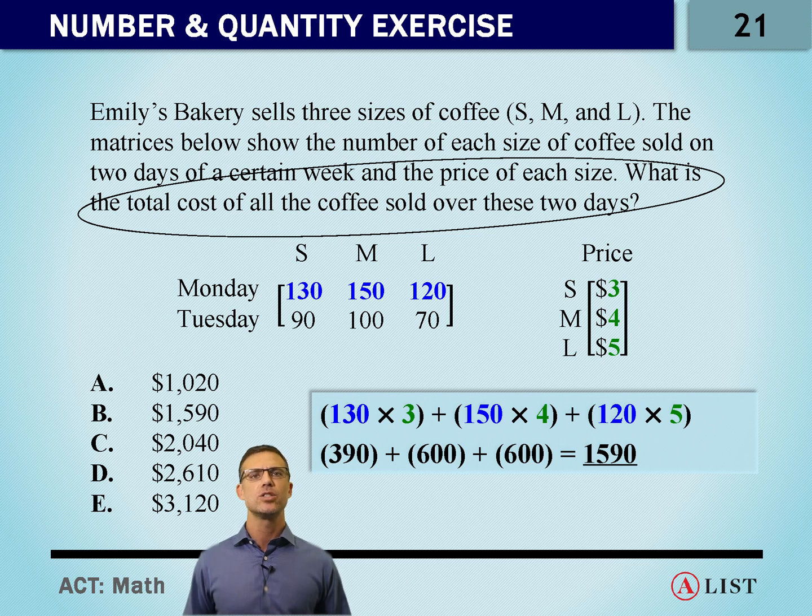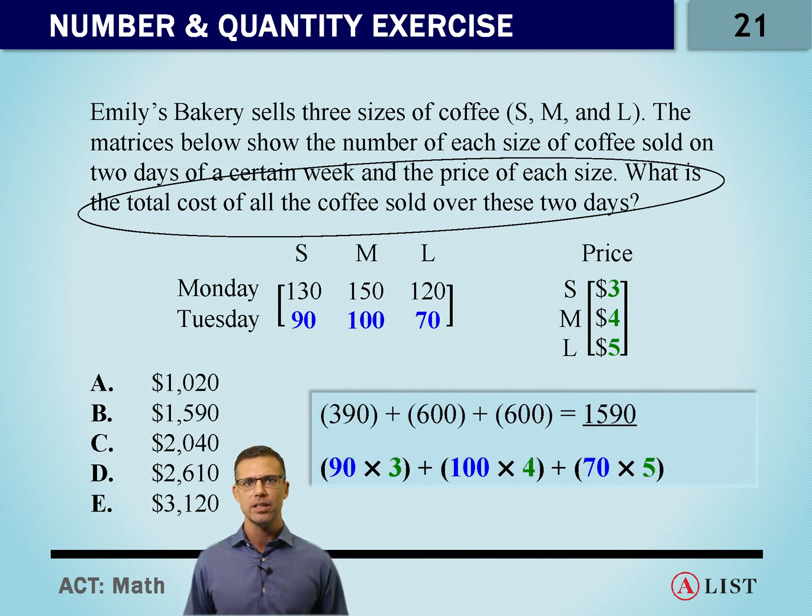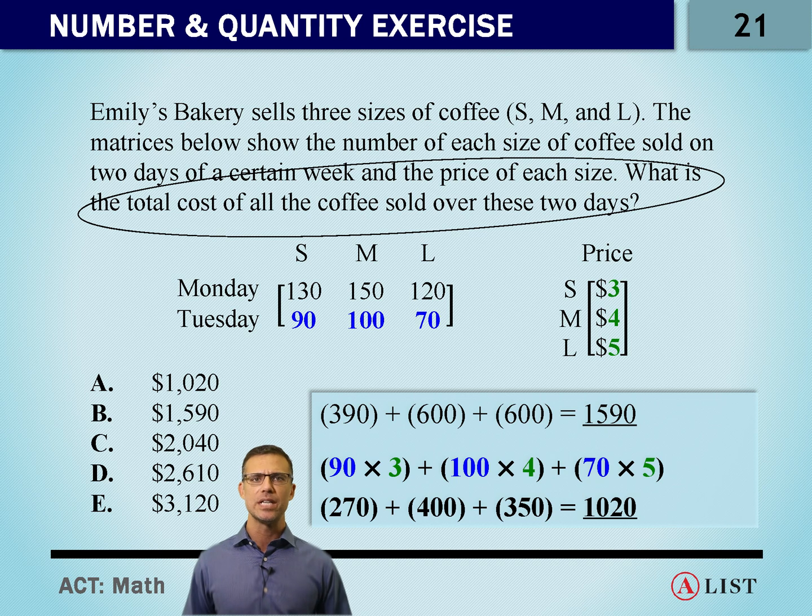So we've got to take a look at Tuesday also. On Tuesday we see small, medium, and large again: 90, 100, and 70. We have to multiply that by the prices for the small, the medium, and the large. And what do we get? Another thousand and twenty dollars.